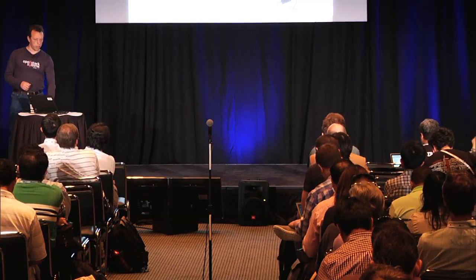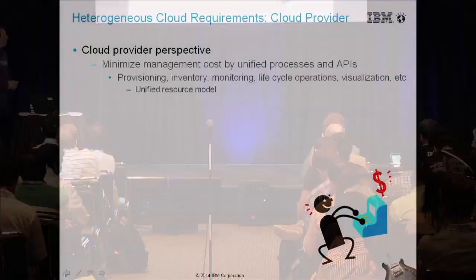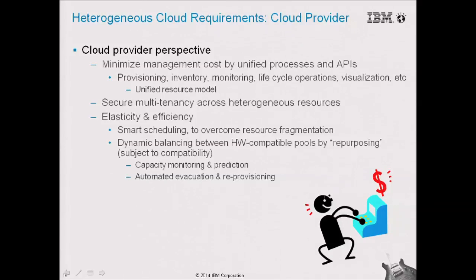From the provider perspective, the basic requirement is of course unified management and unified APIs for the entire lifecycle of the infrastructure. We also need secure multi-tenancy across different resource types, and elasticity and efficiency, which become much more challenging when we have larger fragmentation of resources and a larger amount of different kinds of resources.